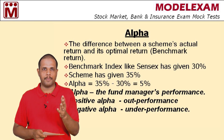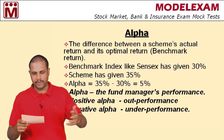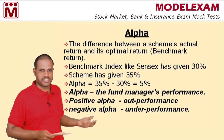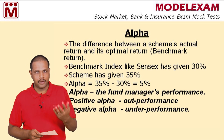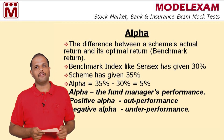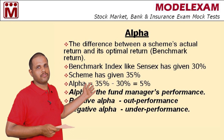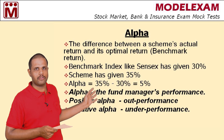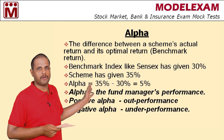For example, let us say Sensex has given 30% return whereas our scheme has given 35% return. So our scheme has given 5% extra. This is what we call alpha. A positive alpha means outperformance and a negative alpha means underperformance. Alpha measures fund manager performance, because the ability to deliver higher return than the benchmark depends on the ability of the fund manager.